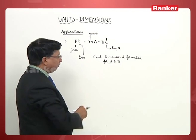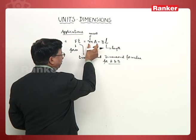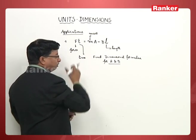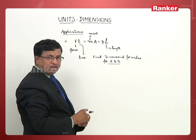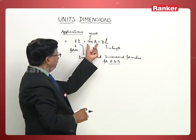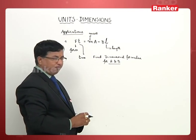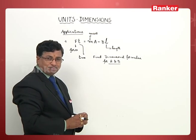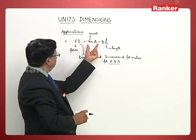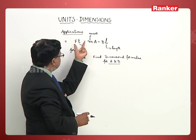I repeat, when we are subtracting BL from MA, we are getting impulse. What is the very meaning of it? This MA must be impulse, BL also must be impulse, then only impulse minus impulse gives us impulse.